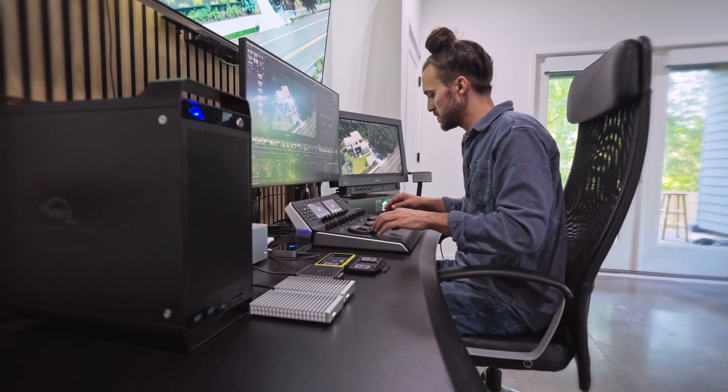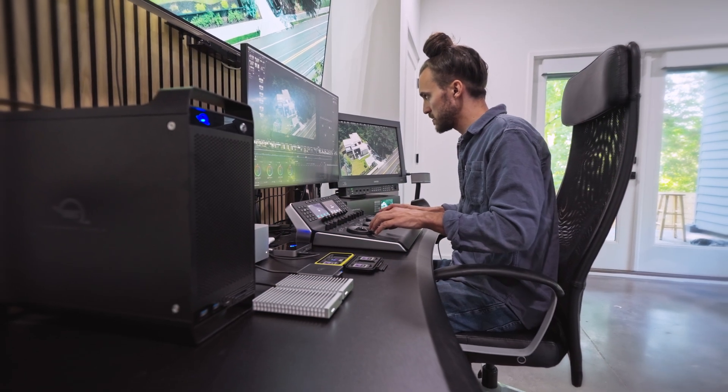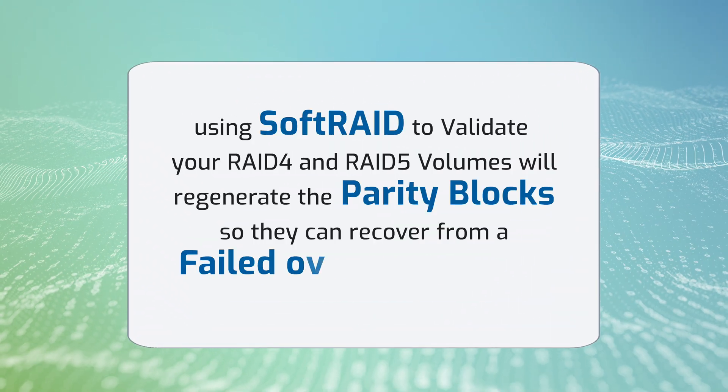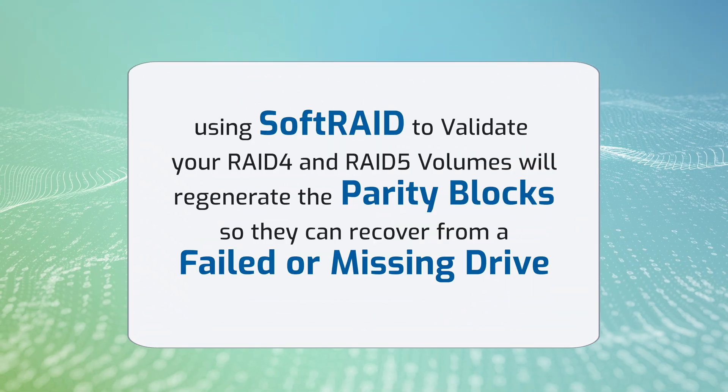You must, however, take one additional step to take advantage of this fix. The rest of this video describes how to make sure your RAID 4 and RAID 5 volumes take advantage of this fix, even if you don't want to upgrade to macOS 15. If you're running macOS 15 or later, you can take advantage of this fix by using the SoftRaid application to validate each of your RAID 4 and RAID 5 volumes.